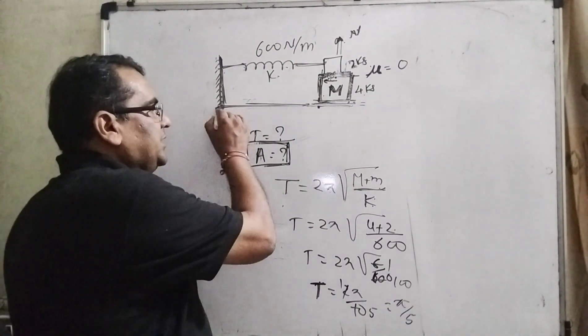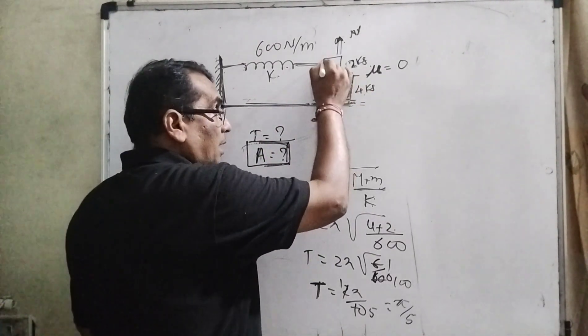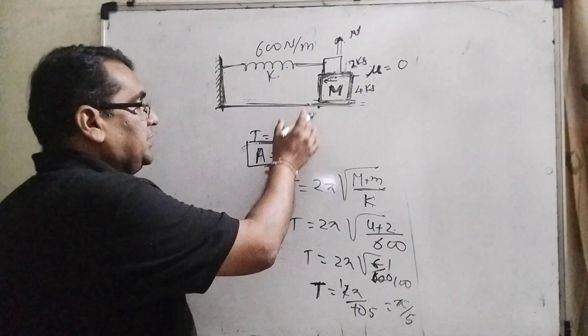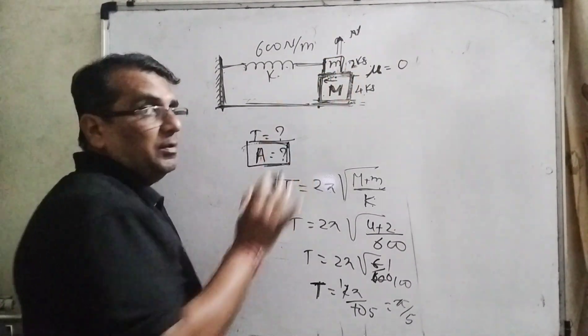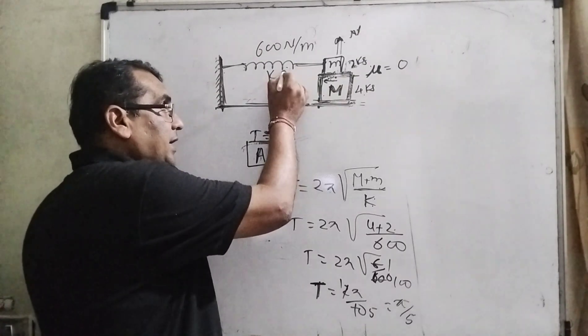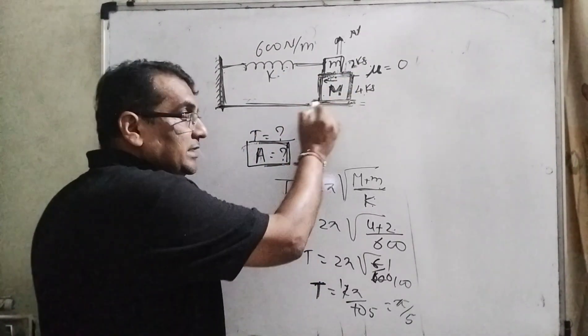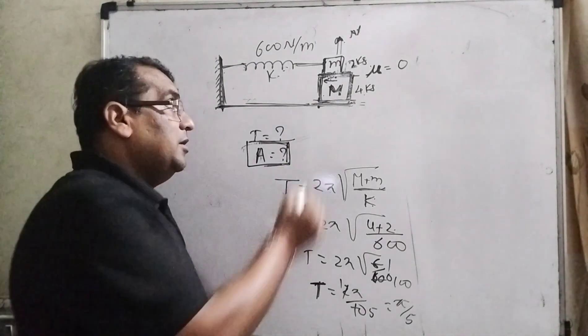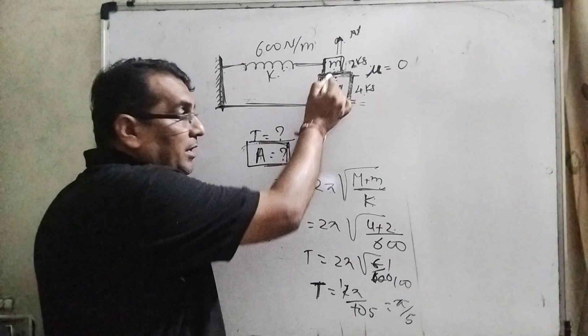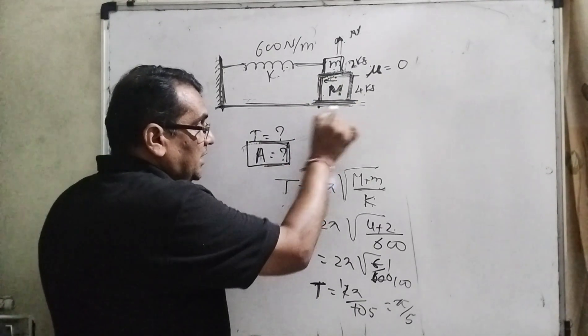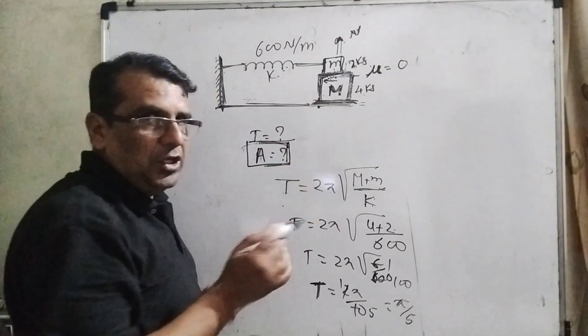This second portion is very important because all the frictional concepts are applied here. You can see that this small block m is kept over the bigger block and is connected with the spring. You are given that they do not slip together. What does it mean? It means the friction is applied between the small m and capital M.